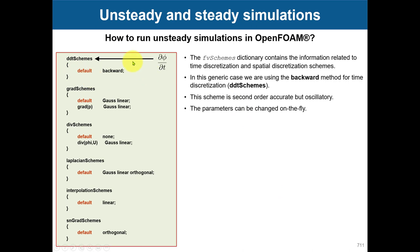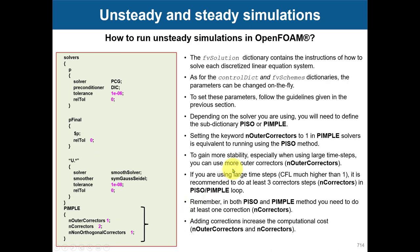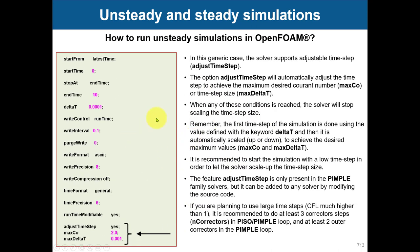In fvSchemes you set up your time discretization. Remember that you have many methods available. The one shown here is backward — second-order accurate — but you can also use first-order accurate. If you keep your CFL number below five, you're going to maintain good accuracy. To set up the time step you do it in controlDict. Delta T is where you set that. The end time of your simulation is set there too, and that is up to you. You give your saving frequency using write interval. And you have options to control the CFL number when using the PIMPLE pressure-velocity coupling.